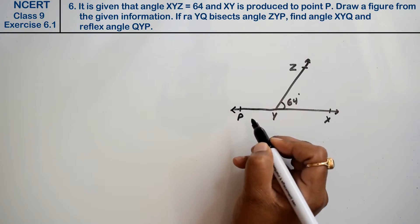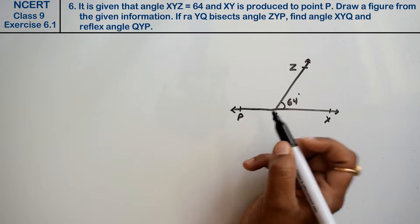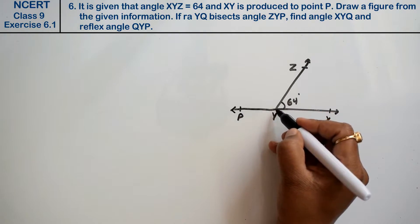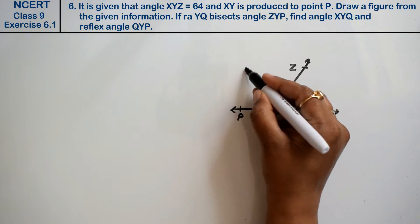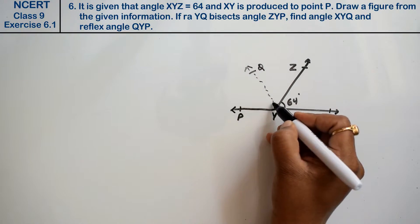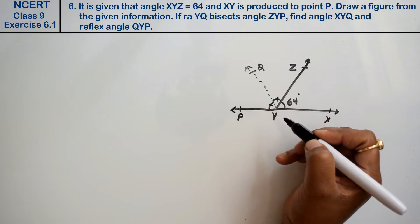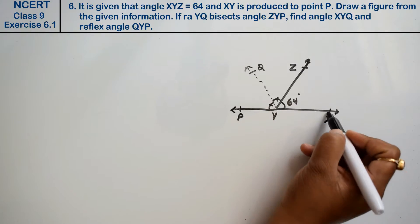यह point P तक produce किया गया है। Draw a figure from the given information. If ray YQ bisects angle ZYP — YQ bisect कर रहा है तो मतलब आधा पे bisect कर रहा है। यह angle Q है और यह angle इस angle के equal होगा क्योंकि यह bisect कर रहा है।